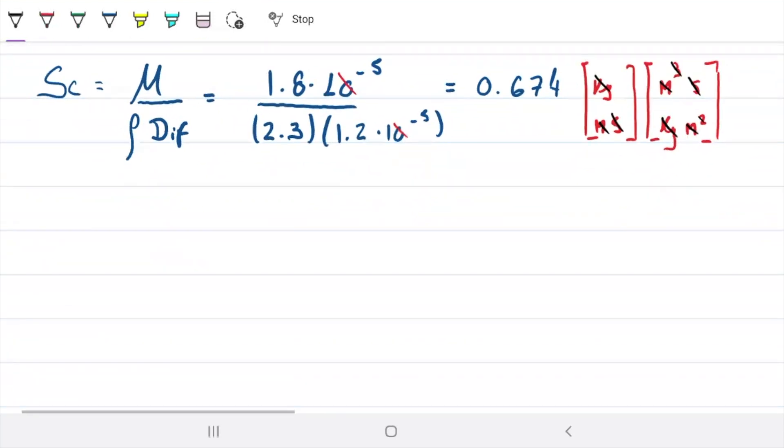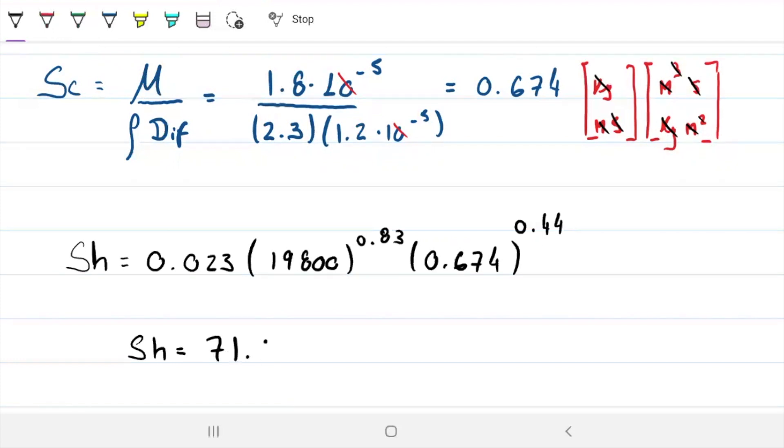Okay, so now let's find Sherwood number, Sherwood number, which is given by the relation 0.023 times Reynolds. And Reynolds, we already have as being 1,900. Times 0.83. And Schmidt's number, which is 0.674, to the 0.44. Okay, so Sherwood number equals, what did we get? 71.2.